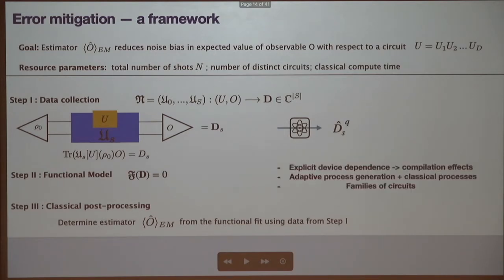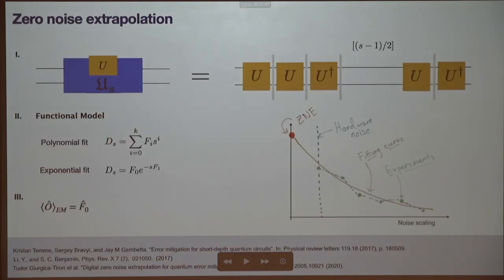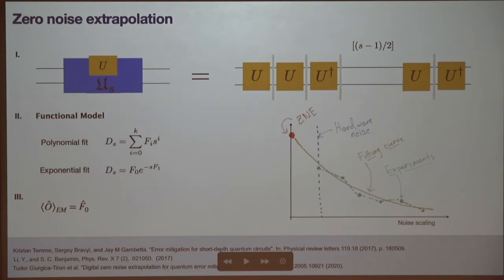You can adapt this framework in a number of ways, including adaptive sub-processes in the data collection part. Let me give a couple of examples that have featured a lot in the literature. One is the zero noise extrapolation method, which basically relies on the idea that you can boost the level of errors at several different noise levels and then use that to extrapolate to a zero level of noise.